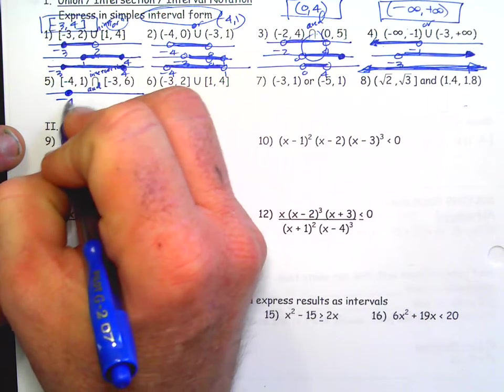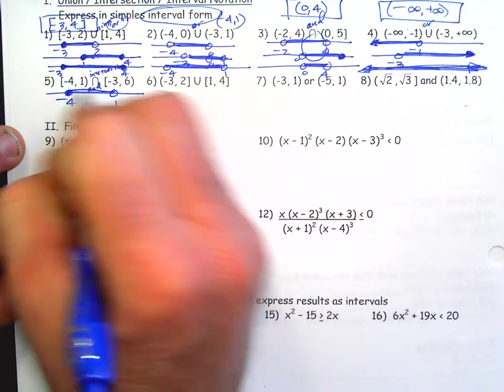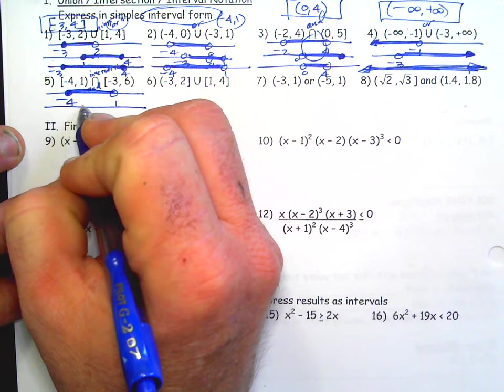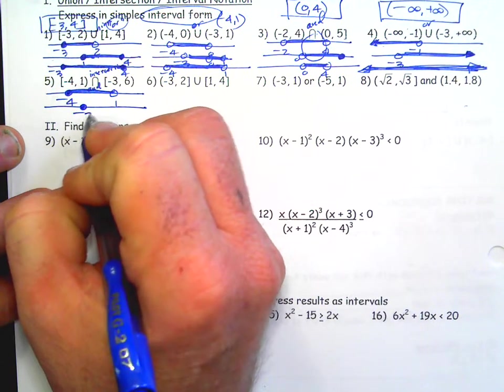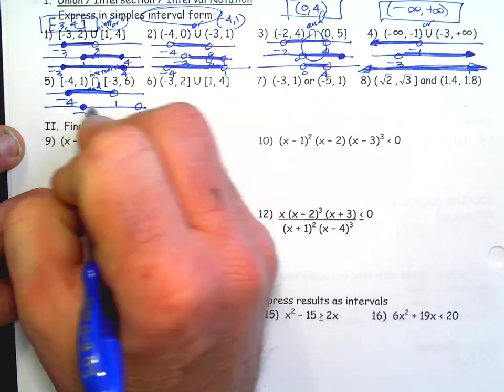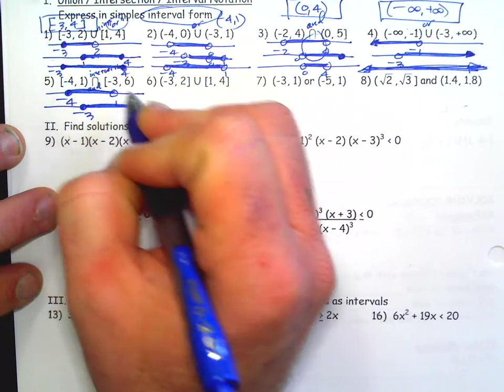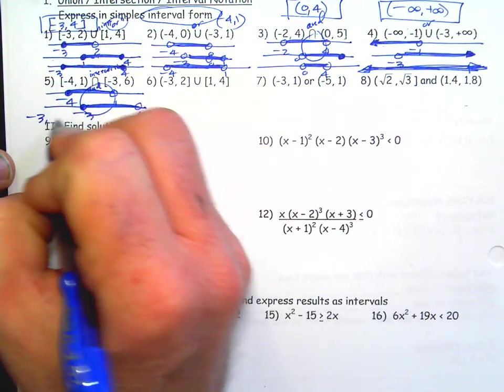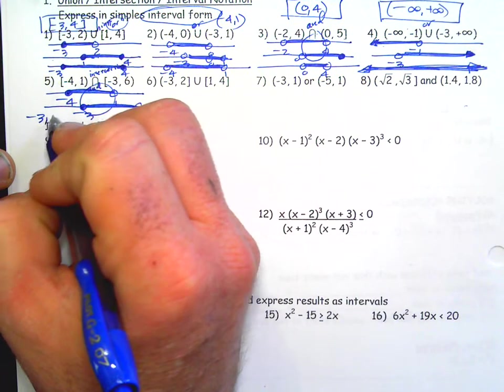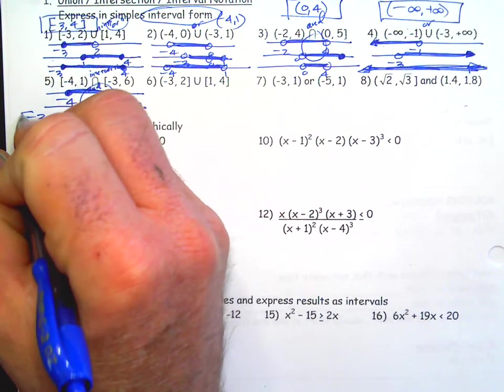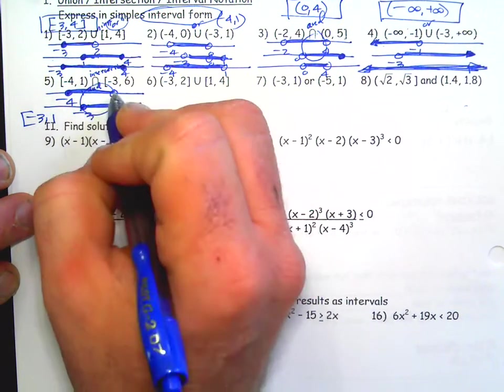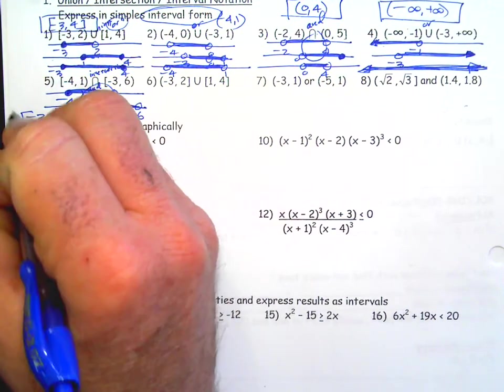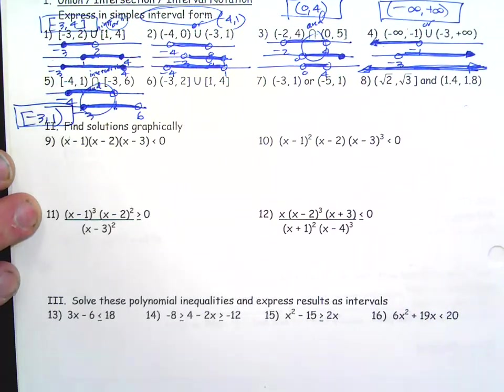Okay. Next one. Solid dot negative 4, open dot at 1. Solid dot negative 3, open dot at 6. Now this is the same as and, so they have to both be true. So negative 3 to 1. Now negative 3 is going to be a bracket because it belongs to both. 1 is not going to be a bracket—it only belongs to this one, so that's going to be a parenthesis.